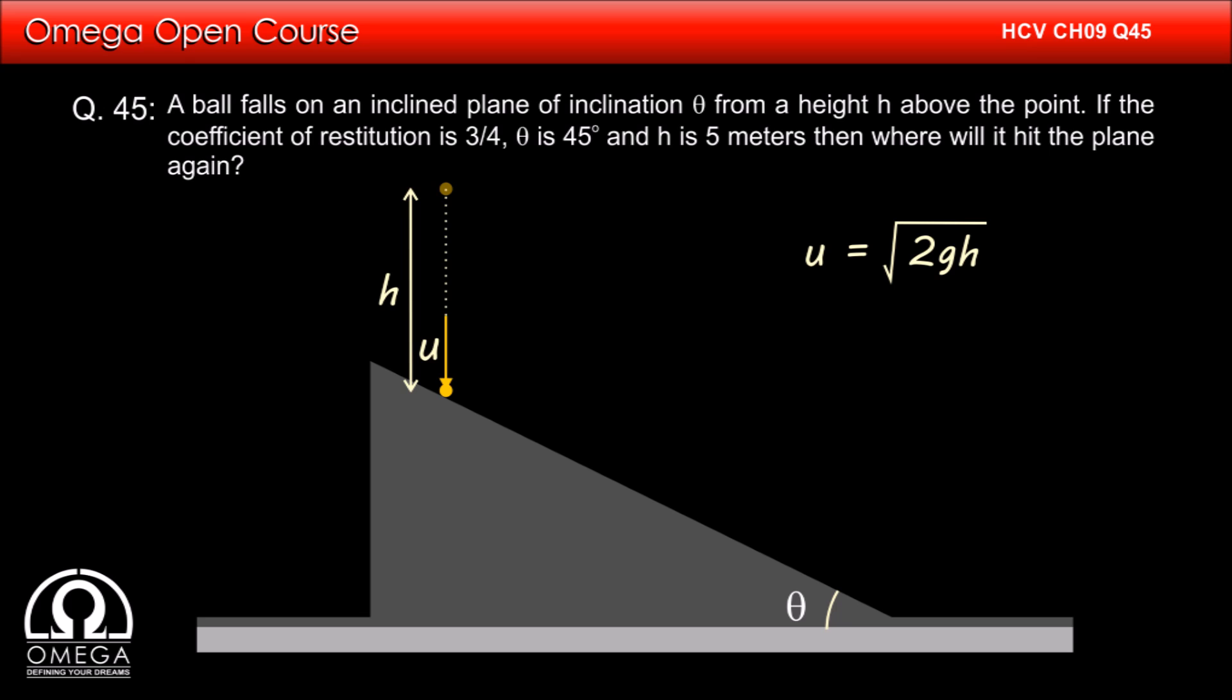Since the ball falls a height h before colliding, its speed before collision is √(2gh). Also, from simple geometry, we know that angle of incidence is theta.